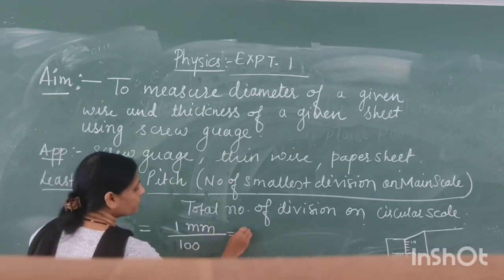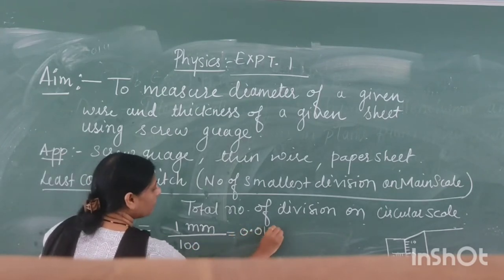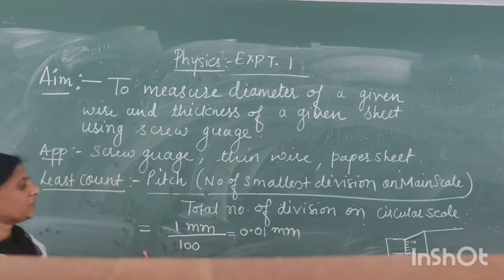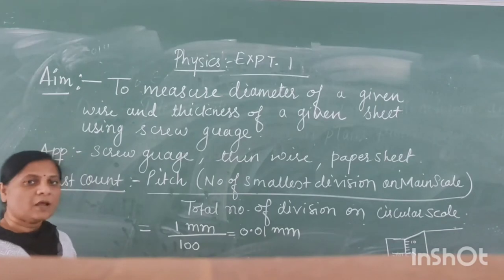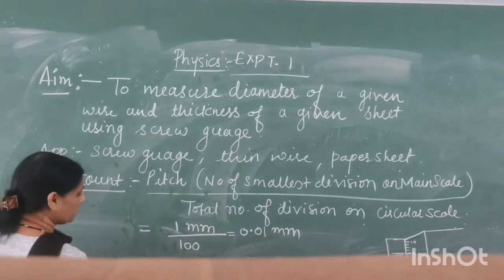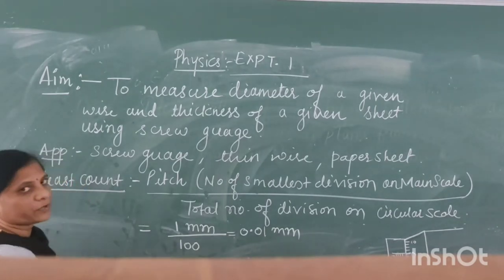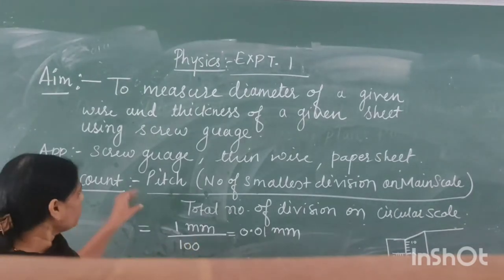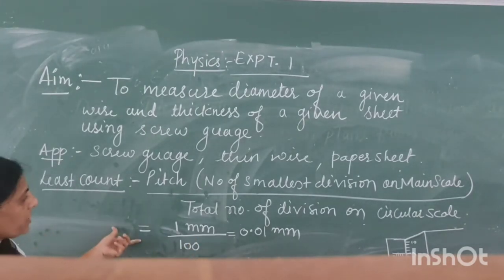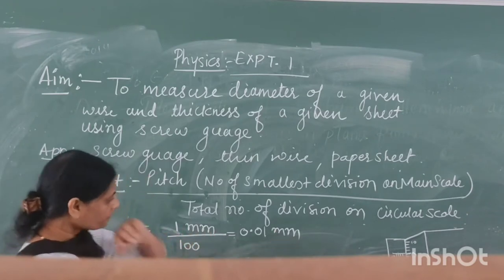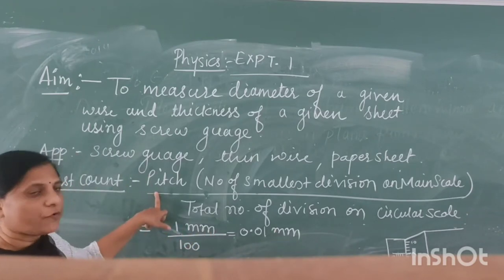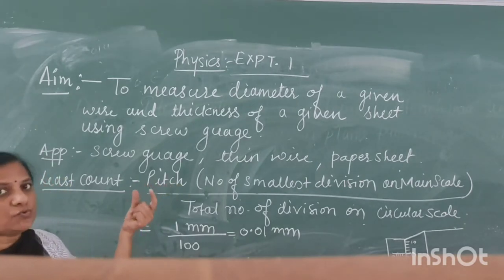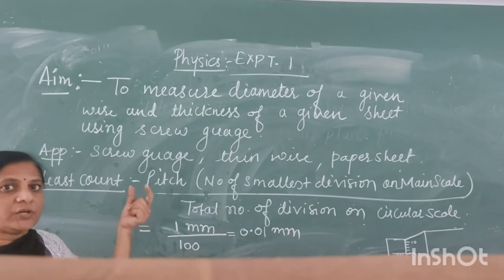So 1 divided by 100 gives 0.01 millimeter. The least count of the screw gauge is 0.01 millimeter, or in terms of centimeters, 0.001 centimeter. In the first part we find out the least count: 0.01 millimeter, using the formula — pitch is the smallest distance between two lines measured horizontally.